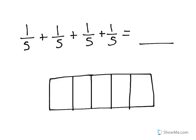In this video, we're going to look at how adding unit fractions together will end up with a particular sum. Let's look at this problem here. We have the problem 1/5 plus 1/5 plus 1/5 plus 1/5 equals blank. So we're going to add all of these unit fractions.